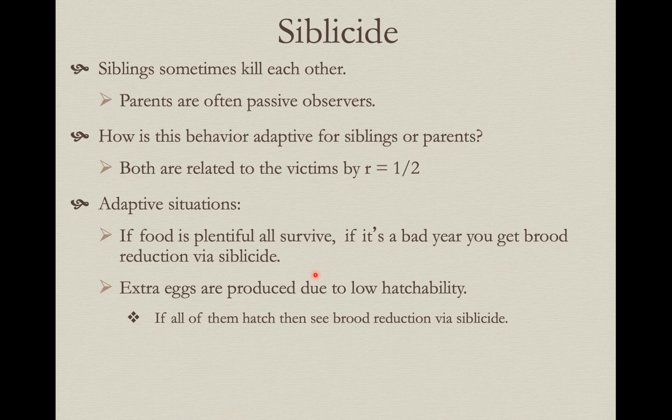So sibilicide can be adaptive when there's just not enough food — somebody gets killed off. But if it's a good year with enough food, you won't see sibilicide. Here's another situation: in species with low hatchability rates — where if you lay a clutch of five, often only four hatch — you might lay six, counting on one not to hatch. But if they all hatch, now you have too many young for the available food supply.